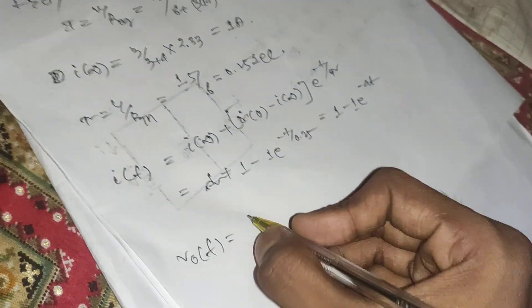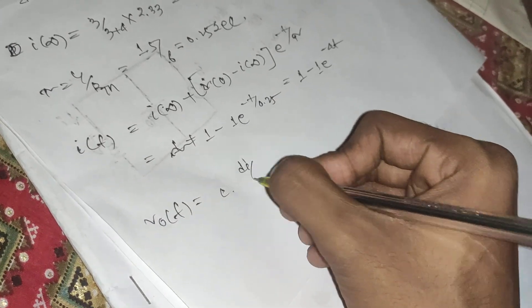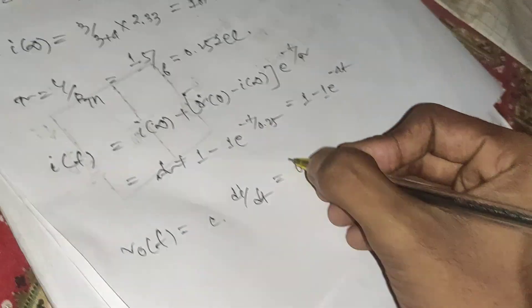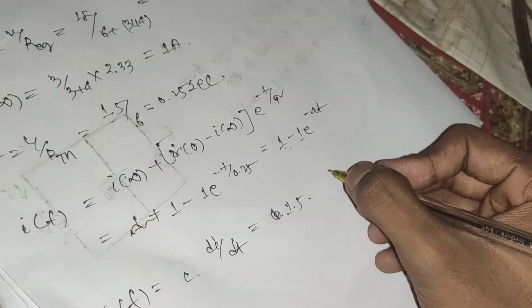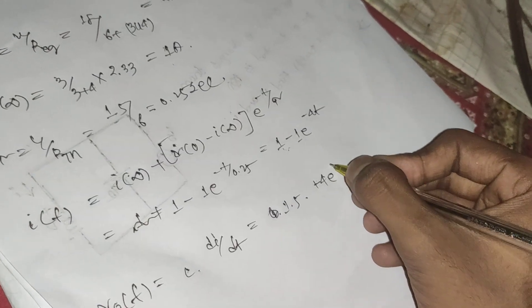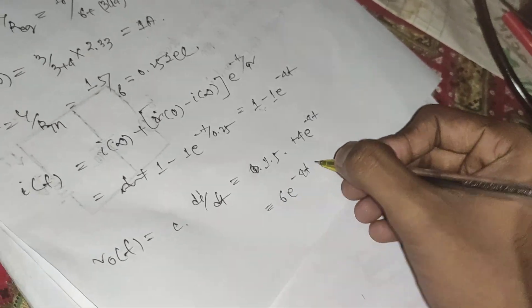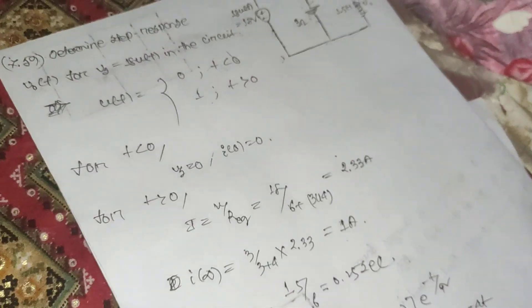They want us to calculate v₀(t). For an inductor, v = L·di/dt. With L = 1.5 and i(t) = 1 − e^(−4t), the derivative gives 4e^(−4t), so v₀(t) = 1.5 × 4e^(−4t) = 6e^(−4t)·u(t) volts. This is the answer for problem 7.59.